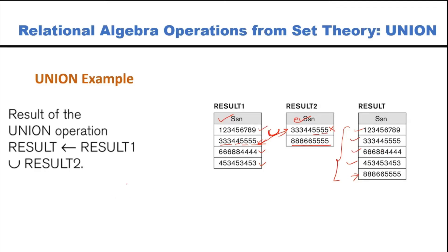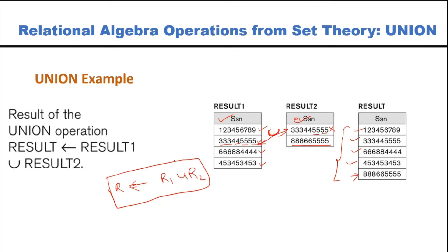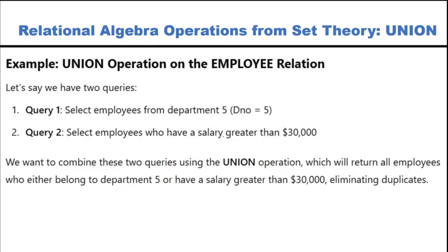How would you write the expression? The result R is equal to R1 union R2 — this is the assignment operator. You are choosing R1 union R2. This is the only expression you have to write for union in relational algebra.